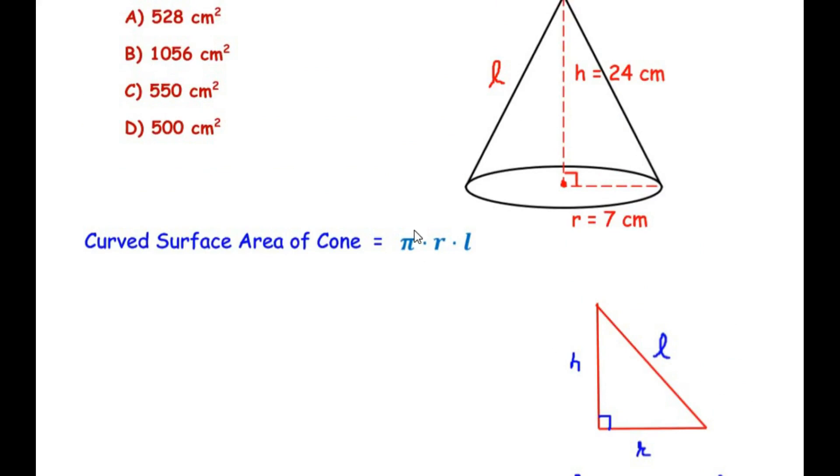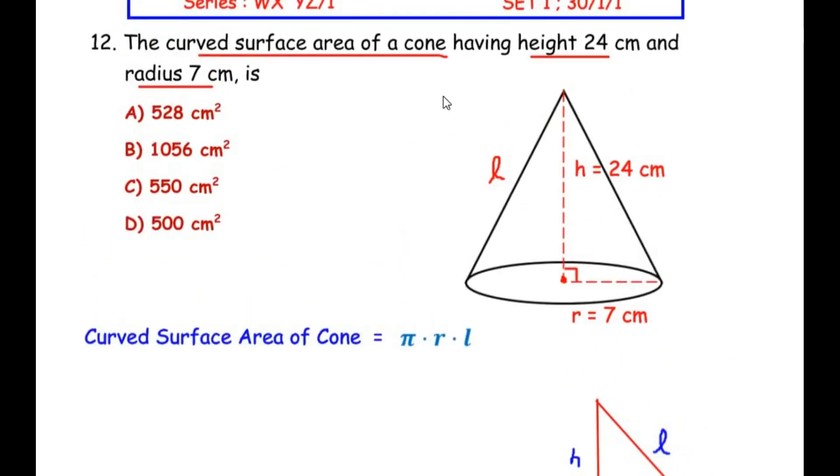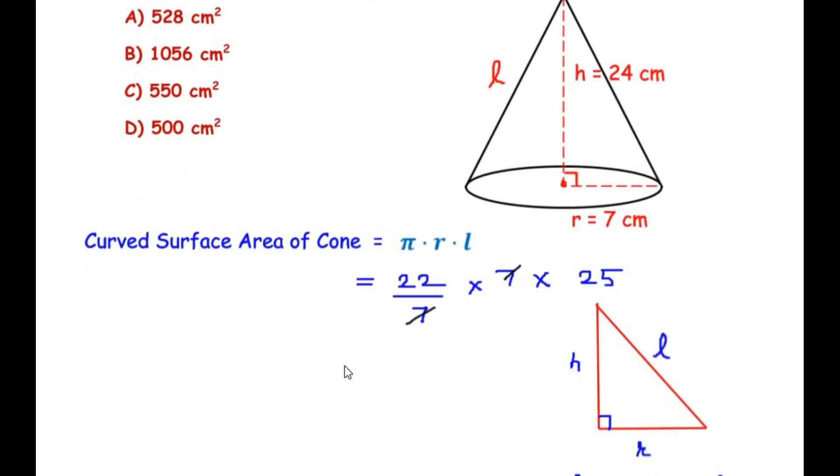And now coming back to this formula the pi value is not given in the question so we have to take it as 22 over 7 and let me substitute the value of radius and the slant height 22 over 7 times 7 times 25. Now 7 from the denominator divides the 7 from the numerator and 22 times 25 gives us a value of 550 cm square. So this is the curved surface area of the given cone. So here our option is going to be option C that is 550 cm square.